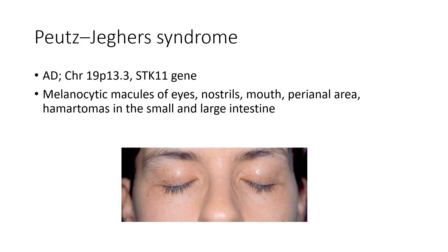Next is Peutz-Jeghers syndrome. It is an autosomal dominant condition characterized by melanocytic macules of the eyes, nostrils, mouth, perianal area, and hamartomas in the small and large intestine.